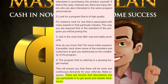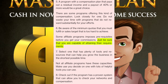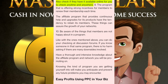Five: choose a program with a compensation plan that pays out a residual income and a payout of 40% or more. Six: be aware of minimum quotas or sales targets that are too hard to achieve — some affiliate programs impose prerequisites before you get your commissions, so be sure you are capable of attaining their requirements. Seven: select one that has plenty of tools and resources that can help you grow the business in the shortest possible time. Eight: check if the program has a proven system that allows you to check your networks and compensation online anytime and anywhere.